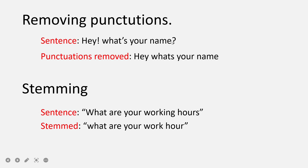When I say remove punctuations — for example, the sentence 'hey what's your name!' — after removing punctuations you're left with 'hey whats your name', with the exclamation mark, apostrophe, and question mark gone. Stemming means finding the root of each word: 'what' stays 'what', 'working' becomes 'work', and 'ours' becomes 'our'. These are the two things we need to implement.